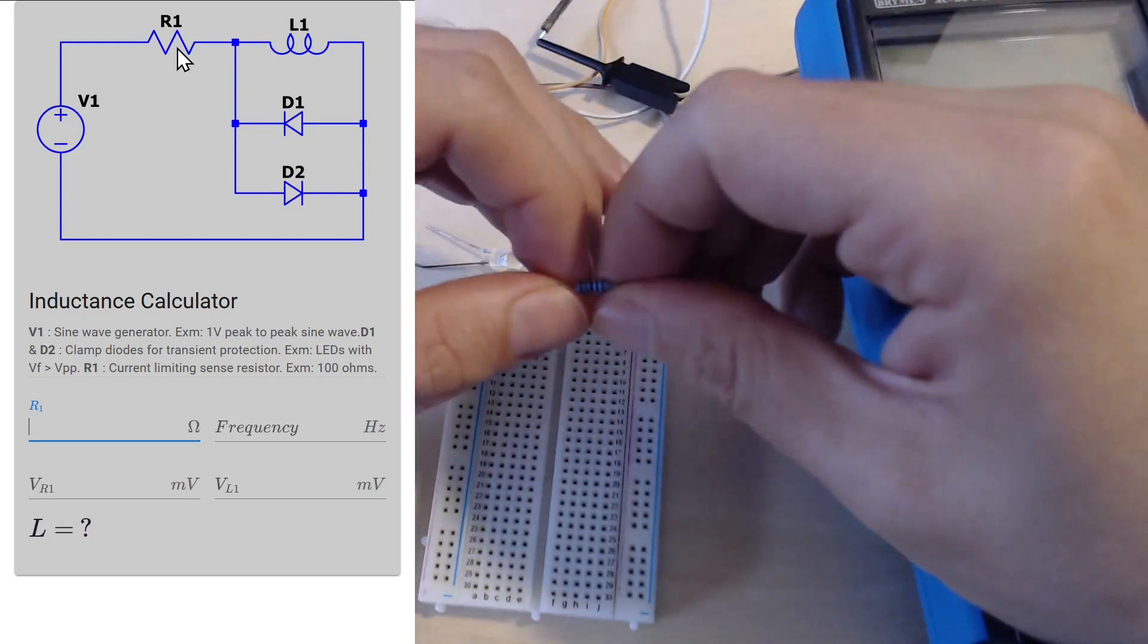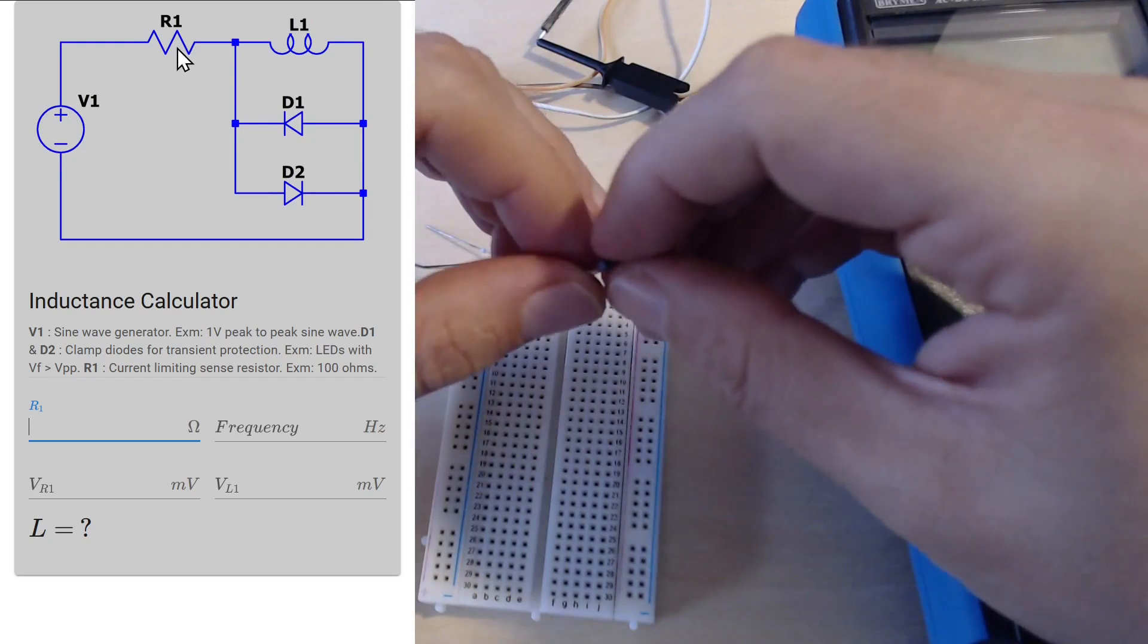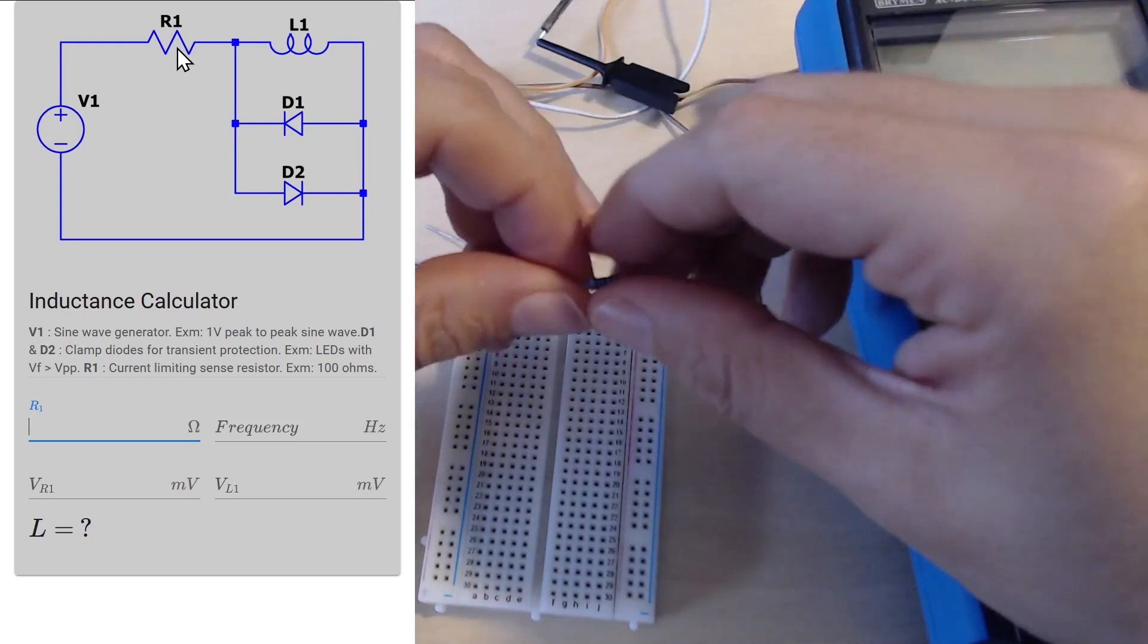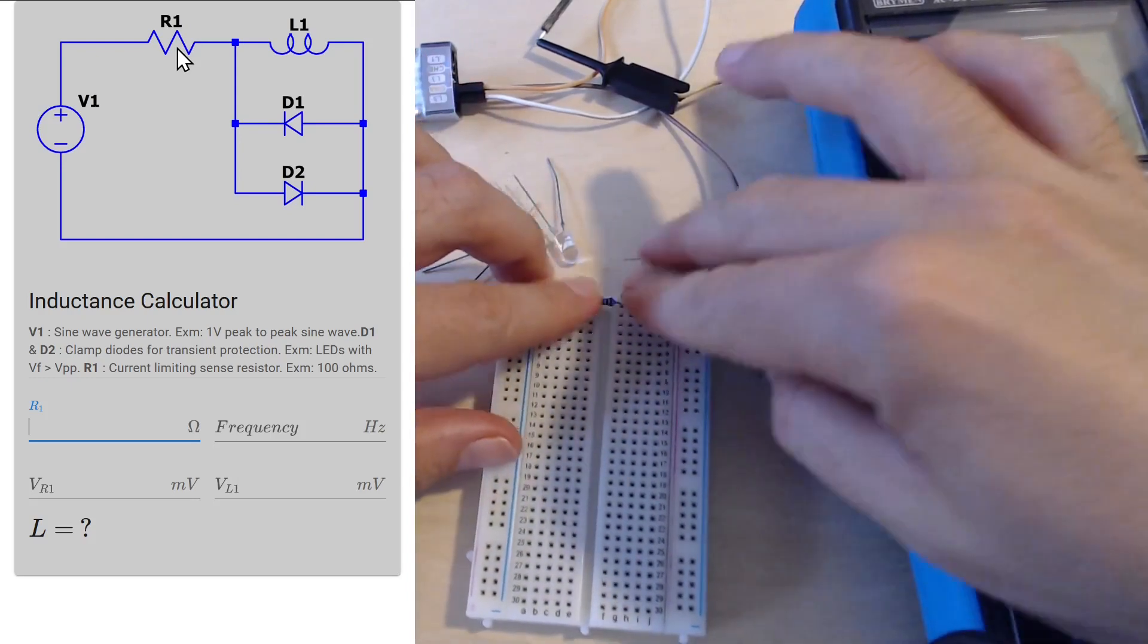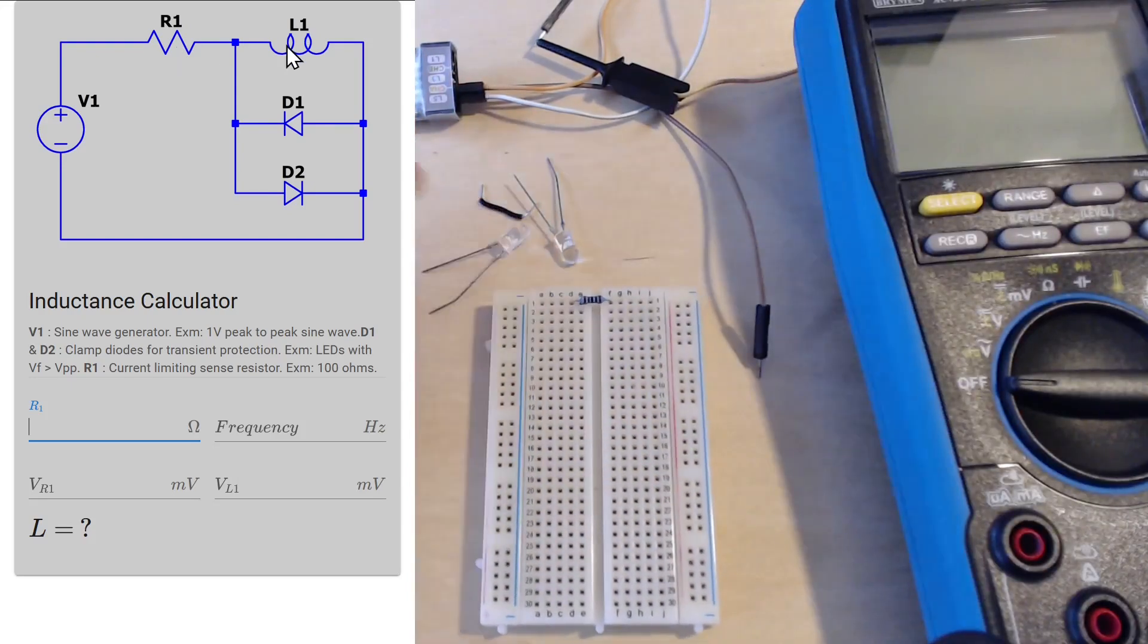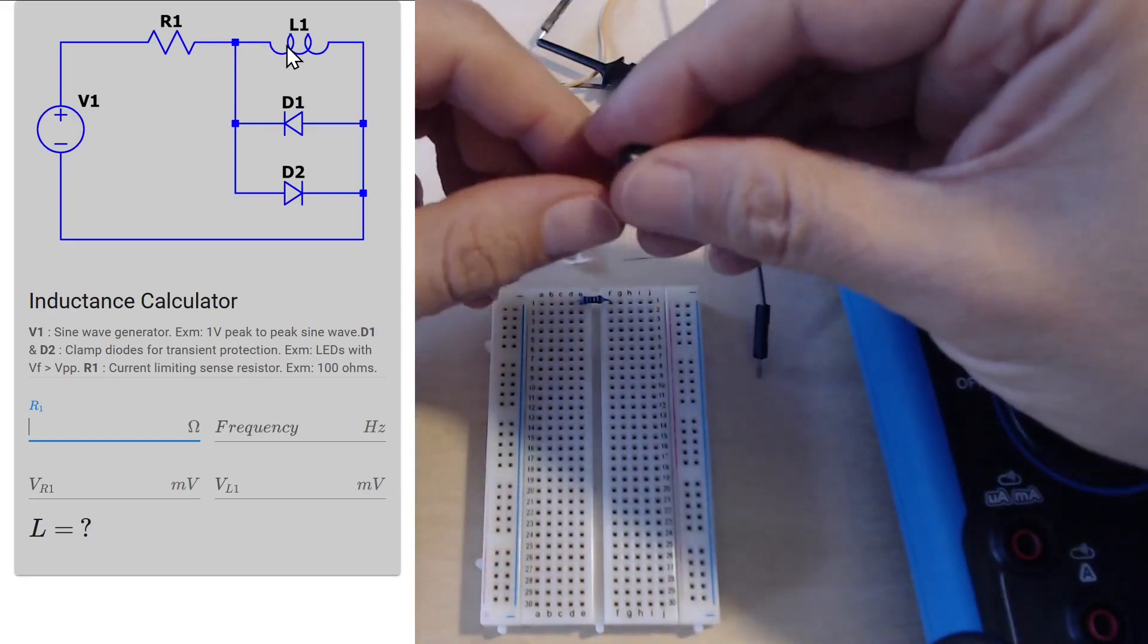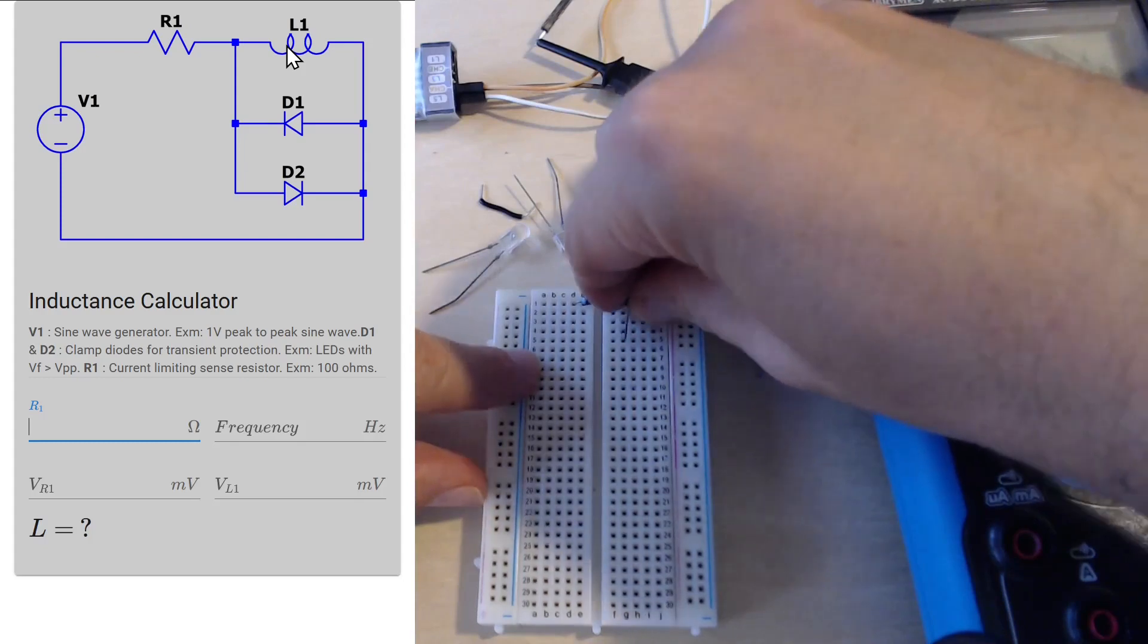You don't want to go too high because then the current will be so small that you won't be able to measure any voltage drops across our inductors and resistor. So yeah, 100 ohms, 150 ohms is a good value to start. I'm just going to pop it on our breadboard. The next thing is our inductor - I have a bunch of test inductors here. I will take one of the mid-level ones, this is a 10 microhenry inductor.